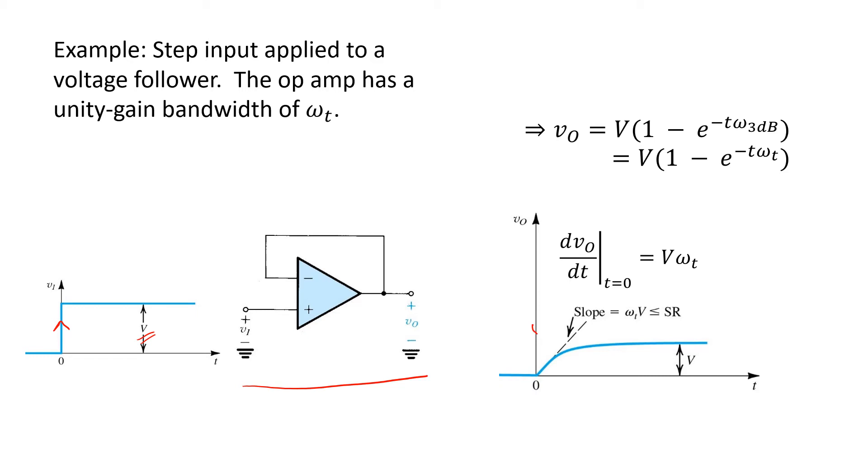Now, assuming the op-amp has a unity gain bandwidth of omega-T, then the 3 dB frequency of this unity gain configuration is simply given by omega-T over the closed-loop gain of this configuration. Remember that a voltage follower is a special case of a non-inverting configuration where R2 is equal to 0 and R1 is equal to infinity. Therefore, the 3 dB bandwidth of this voltage follower is simply the unity gain bandwidth of the op-amp itself. The closed-loop configuration has a first-order response with a bandwidth equal to omega-T.